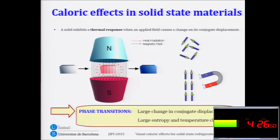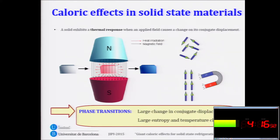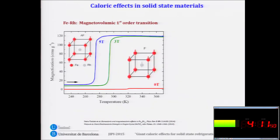As we know, in phase transitions, we can clearly see that there is a large change in conjugate displacement. And as a consequence of that, we can measure large entropy change and large temperature change as a consequence of this phase transition.